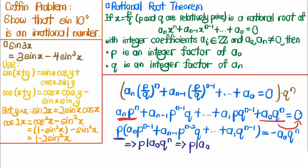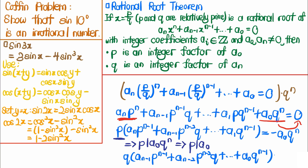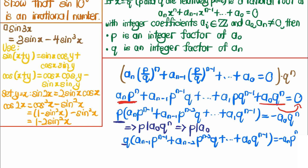Using a similar argument, we shift the aₙ term to the other side and factor out q on the left-hand side. This gives q·(aₙ₋₁·pⁿ⁻¹ + aₙ₋₂·pⁿ⁻²·q + ... + a₀·qⁿ⁻¹) = −aₙ·pⁿ. So q divides aₙ·pⁿ, and since q and p are relatively prime, q divides aₙ. Therefore we have shown the rational root theorem is true.